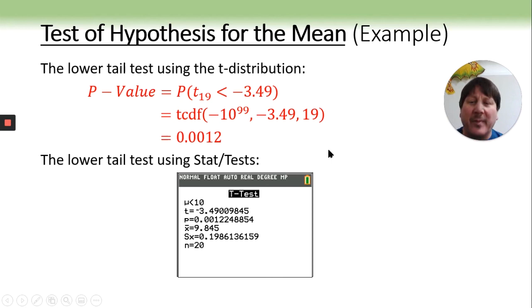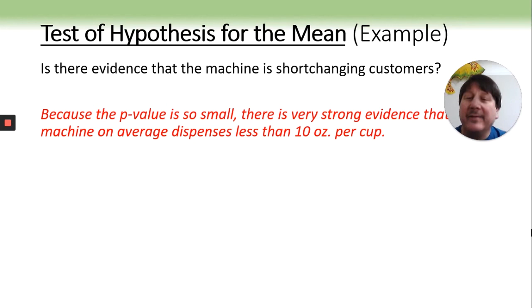The p-value is very small, so that is very strong evidence. Because the p-value is so small, there is strong evidence that the machine is dispensing less than 10 ounces per cup.